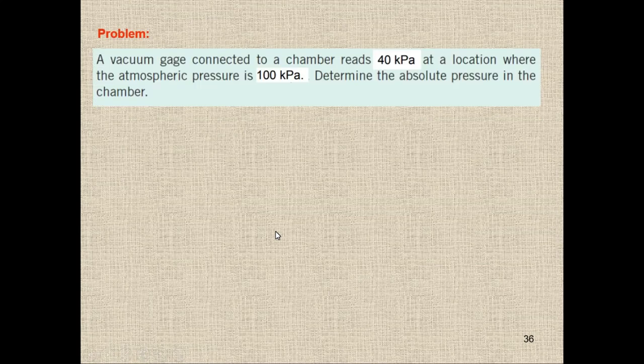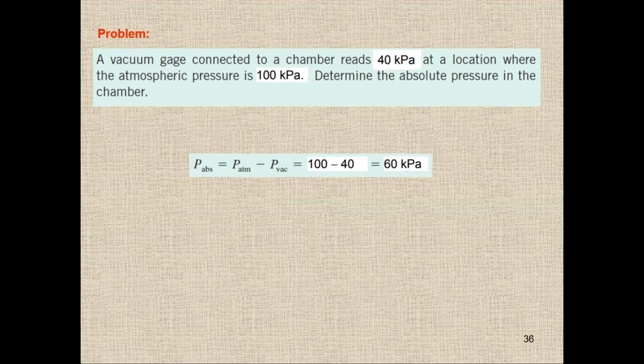Here is a simple question: a vacuum gauge connected to a chamber reads 40 kPa at a location where atmospheric pressure is 100 kPa. Determine the absolute pressure in the chamber. We have vacuum pressure of 40 kPa and atmospheric pressure of 100 kPa. Therefore: P_absolute = P_atm − P_vacuum = 100 − 40 = 60 kPa.